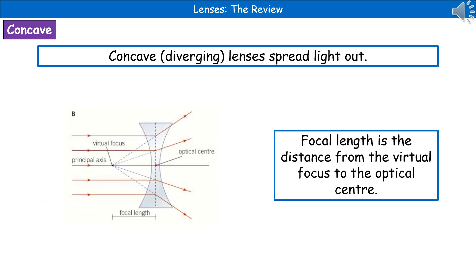The second type of lens we will encounter is the concave or diverging lens. Their whole purpose is to spread light out. As shown in the diagram in the bottom left, as light comes in and passes through the lens, it spreads out further, going to a wider range on the other side. We do still have a focal length, but this time it goes from the optical centre — the very central point of our lens — to the virtual focus.